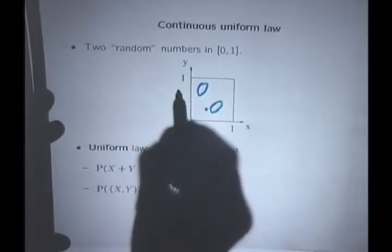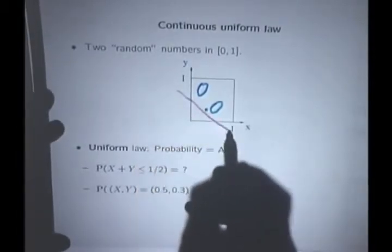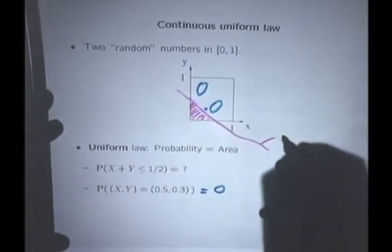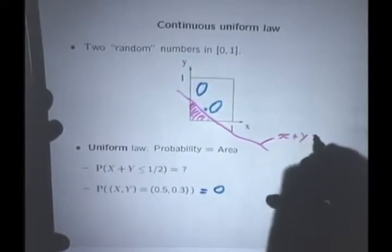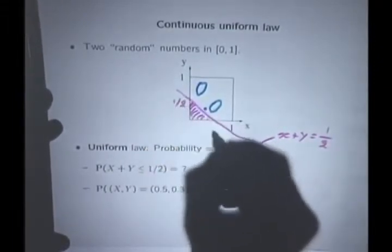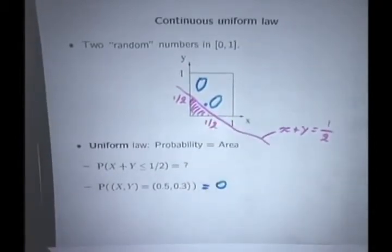The sum being less than one-half corresponds to getting an outcome that's below this line, where this line is the line where x plus y equals to one-half. So the intercepts of that line with the axis are one-half and one-half.